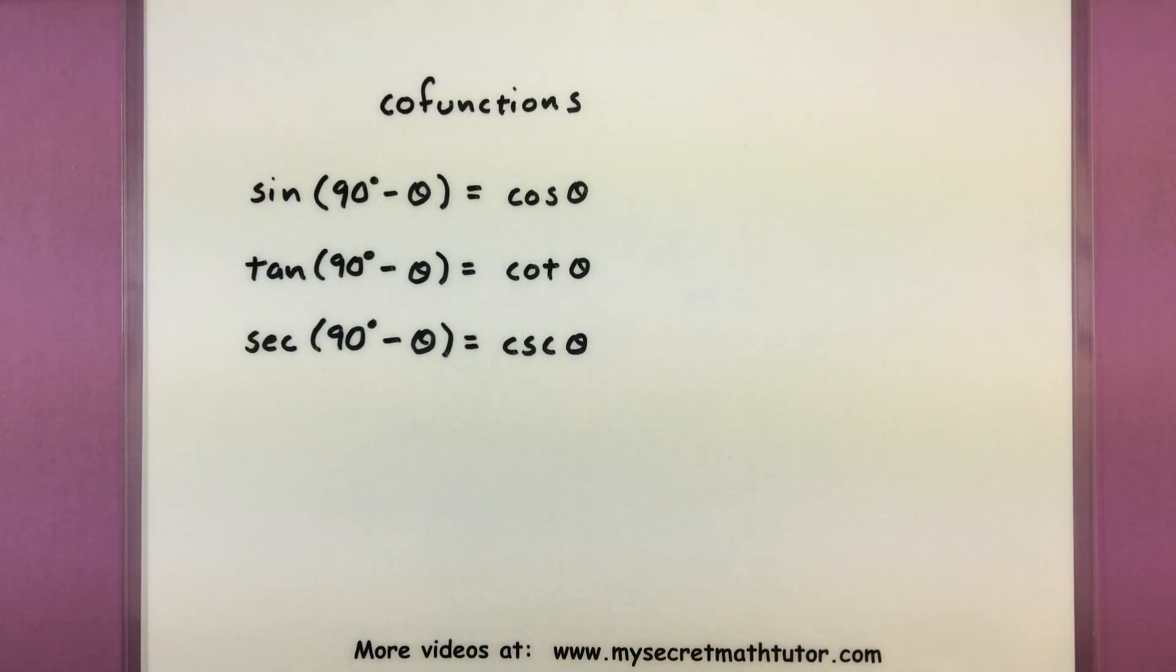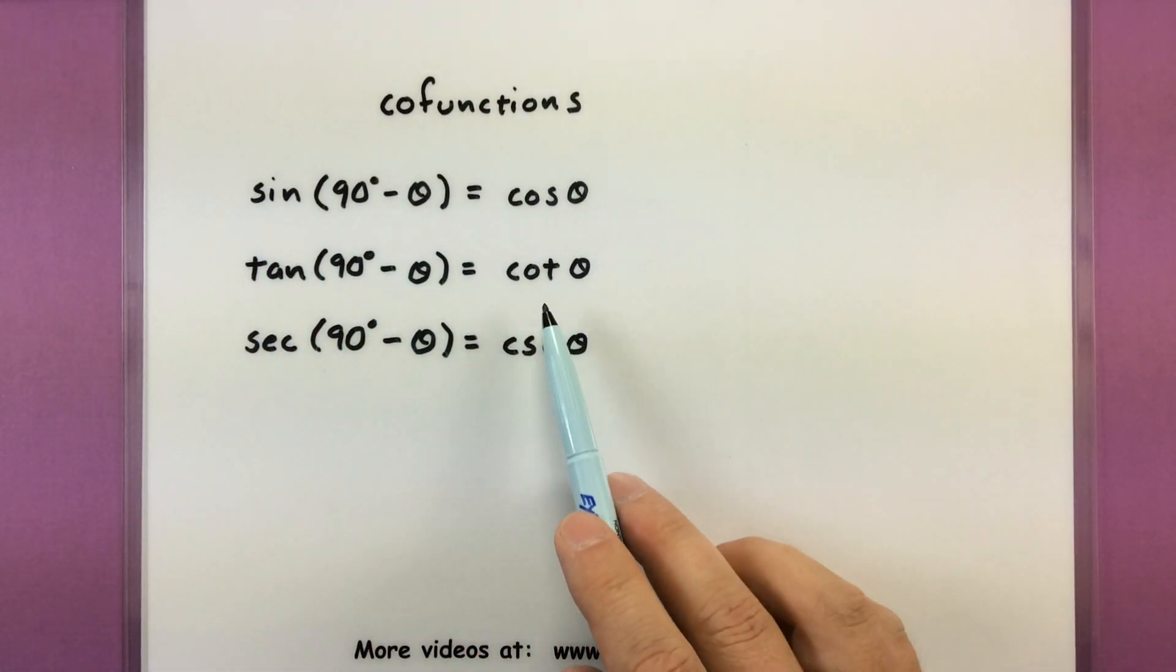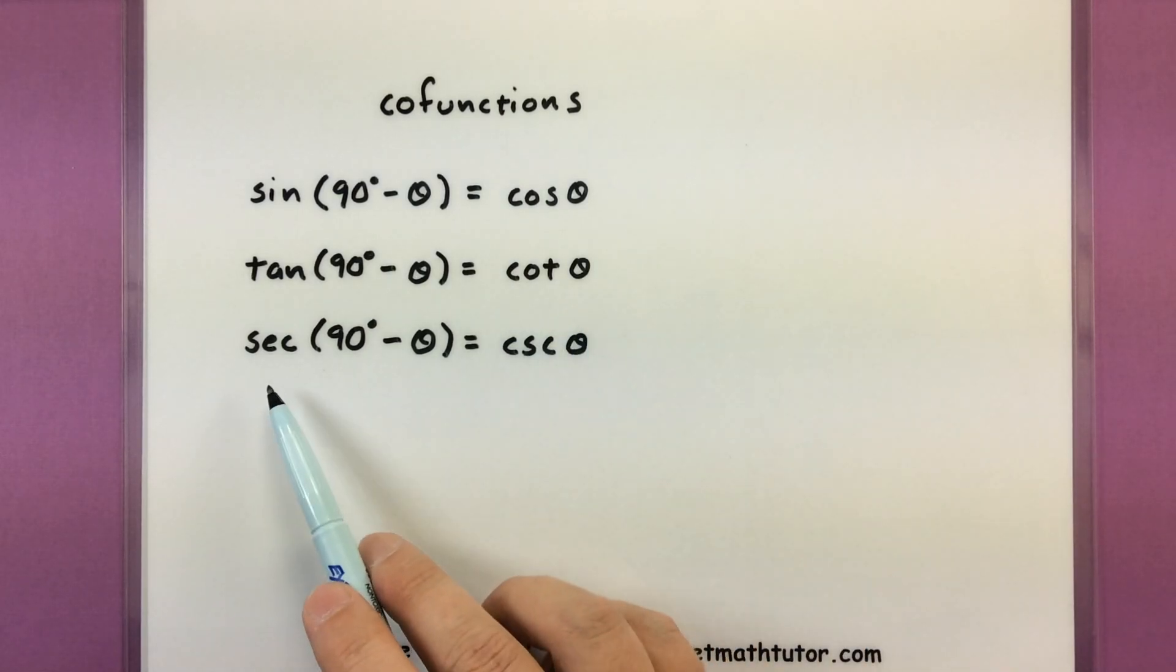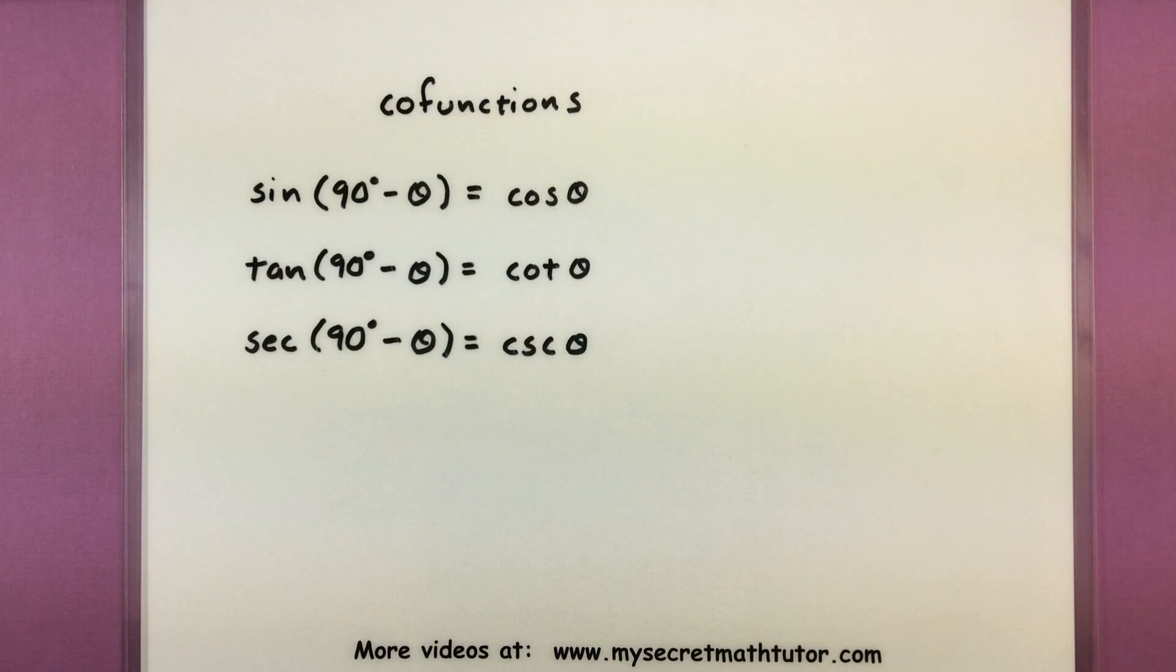So sine is the cofunction of cosine. Tangent is the cofunction of cotangent. And secant is the cofunction of cosecant. In fact, you can really hear it in the names. So you can figure out which is connected with which.